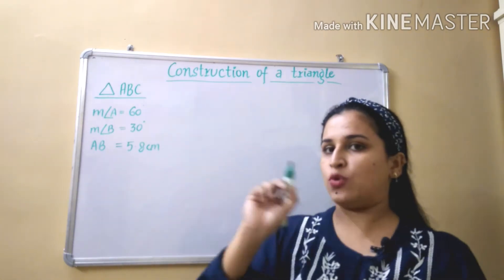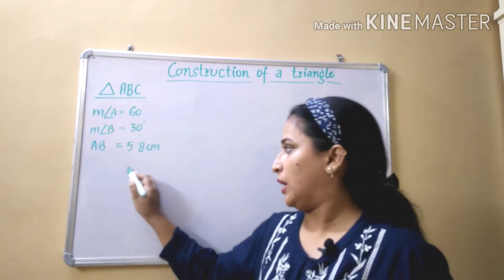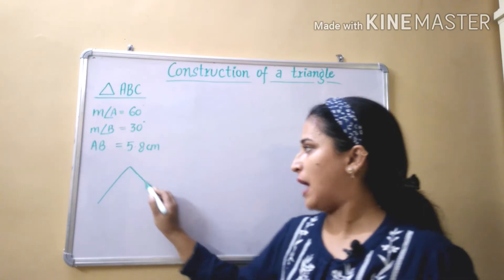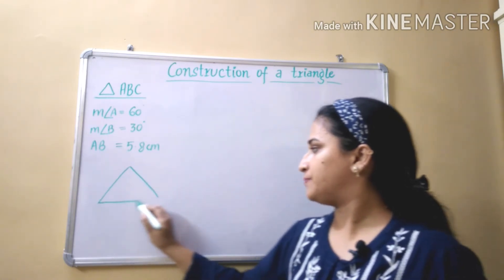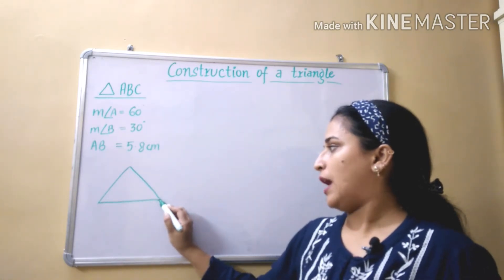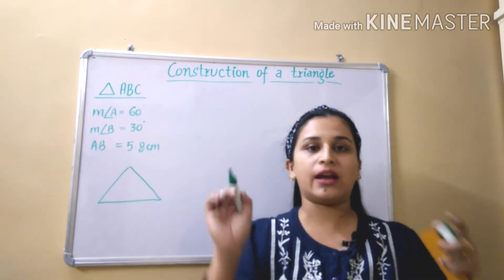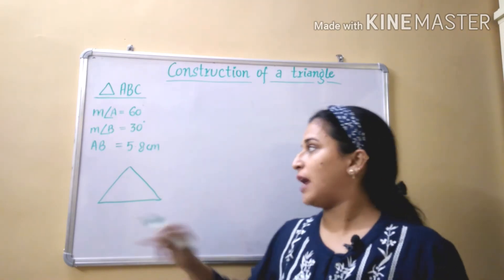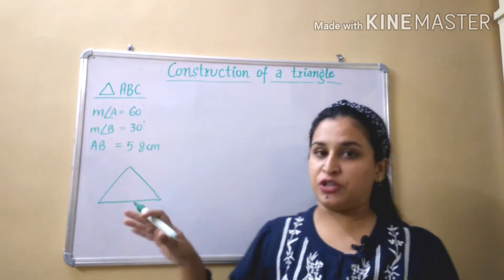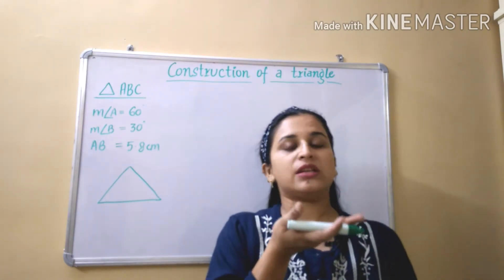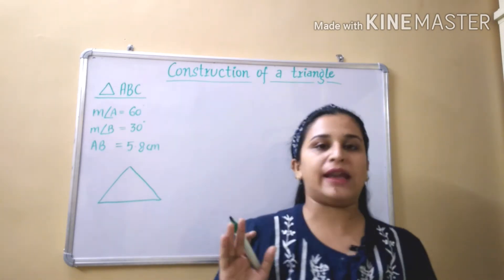So first of all I am drawing the rough sketch. A triangle we know it is like this. As I have drawn a rough sketch, first of all we are drawing rough sketch. And earlier I told you every time we must have the base measurement because if there is a base, we can create any shape.